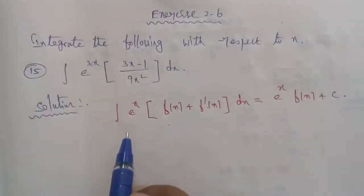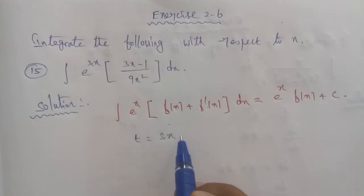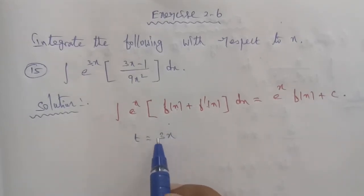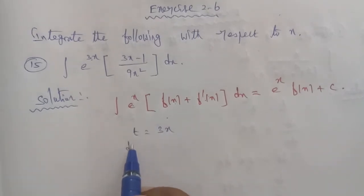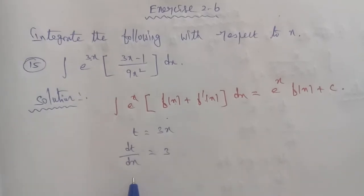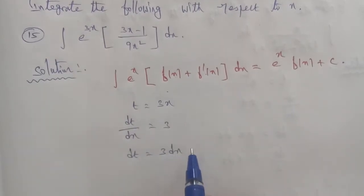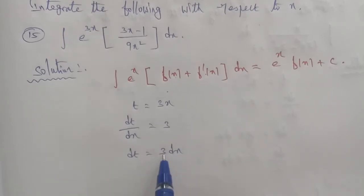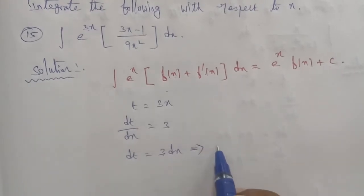By using substitution method, let t equal to 3x. Differentiating, dt by dx equals 3, so dt by 3 equals dx.